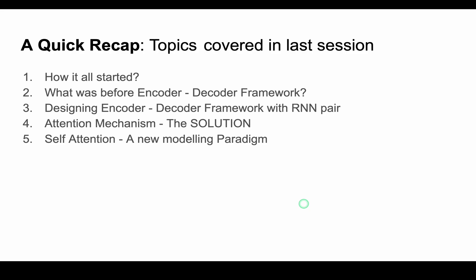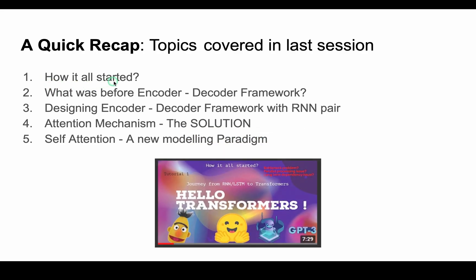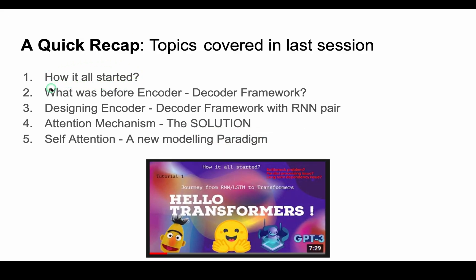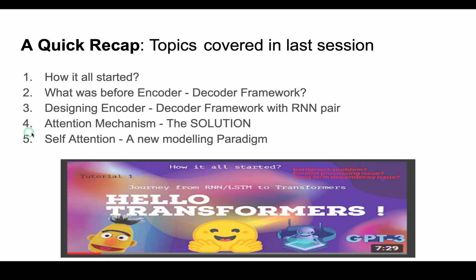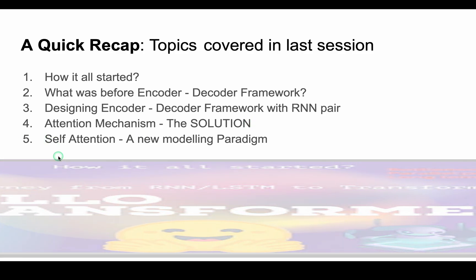This video is a continuation to the previous video titled Journey of Transformers. There we covered how the concept of Transformers started, then we saw traditional sequence-to-sequence based architectures like Recurrent Neural Networks or RNN, as well as LSTMs or Long Short Term Memory Networks. With the help of an RNN pair, we also designed the encoder-decoder framework and its limitation with respect to parallel processing and information bottleneck. Finally, we saw the overview of attention mechanism to compute the weights of multiple hidden states. If you have not seen the previous video, I will put the link in the description.